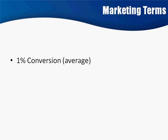I want to go over some terms that I'm going to be using throughout this course. These are terms that you definitely need to know if you're doing pretty much any kind of marketing, but especially with ClickBank. One is conversion, and I'm using the example of a 1% conversion. A 1% conversion is a pretty typical, average conversion.